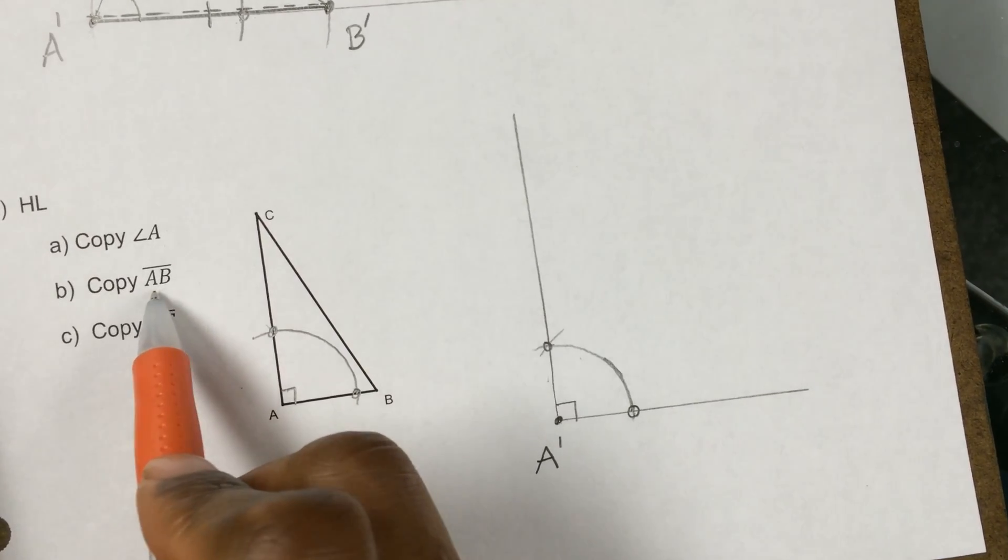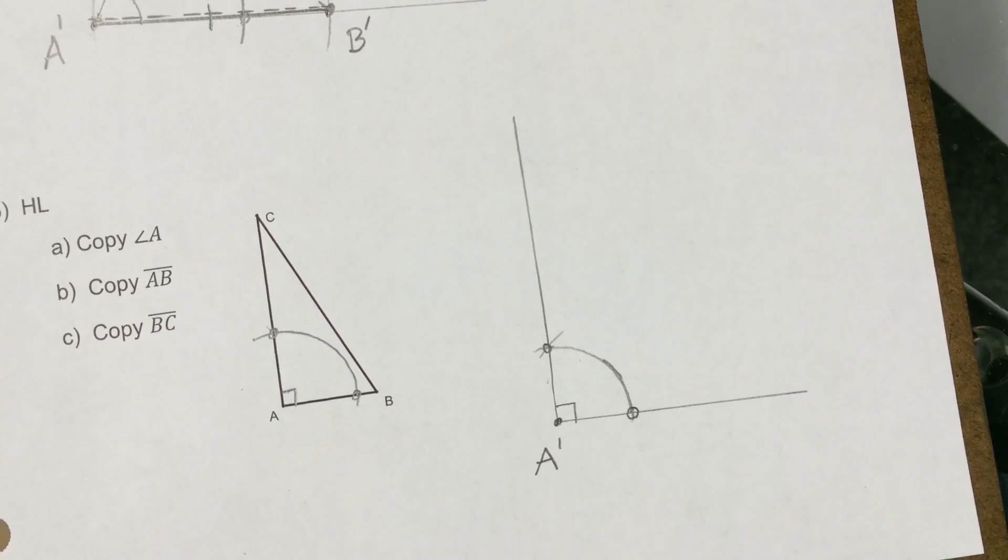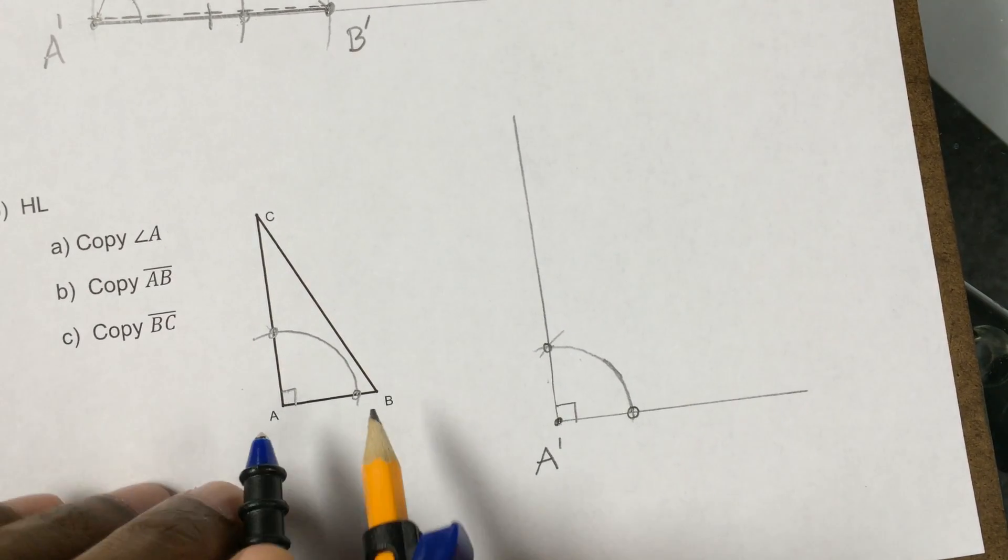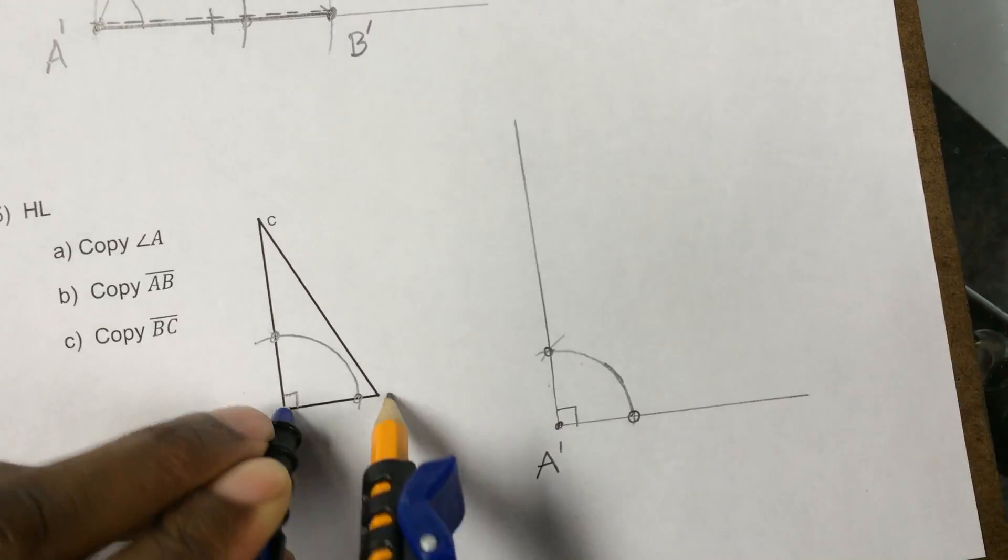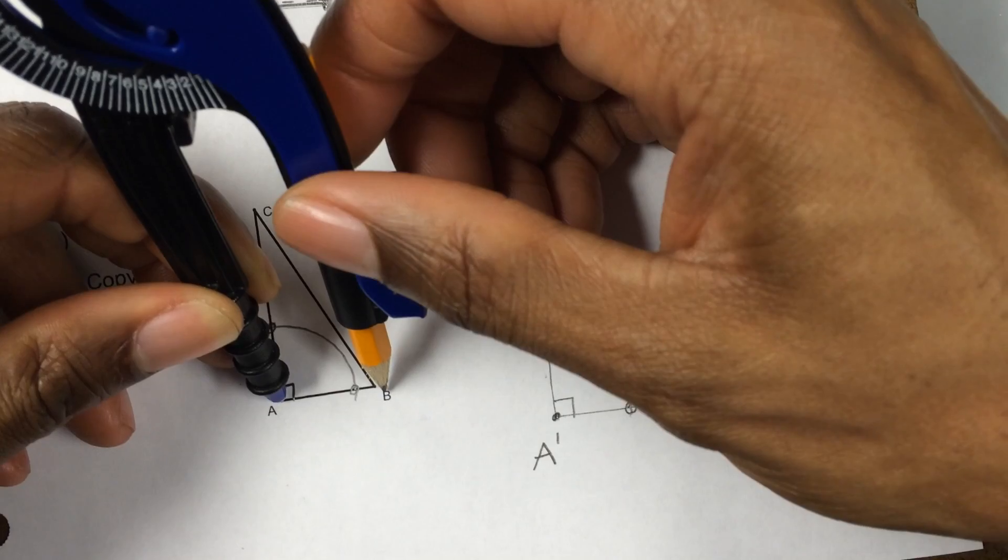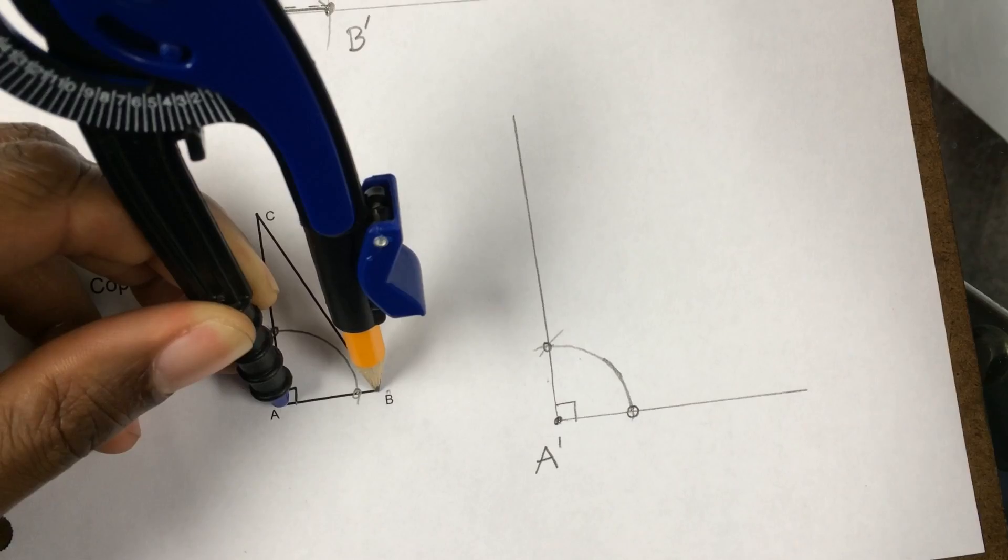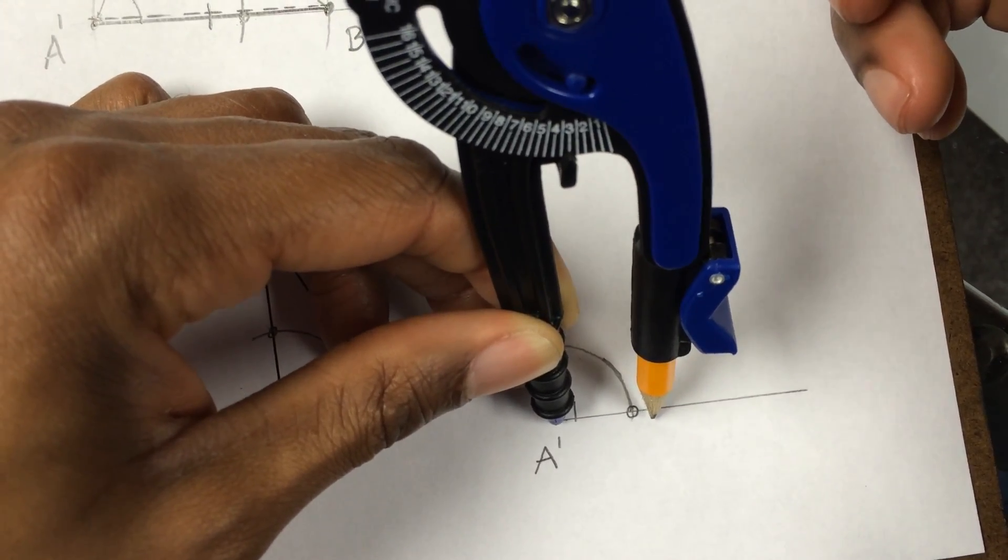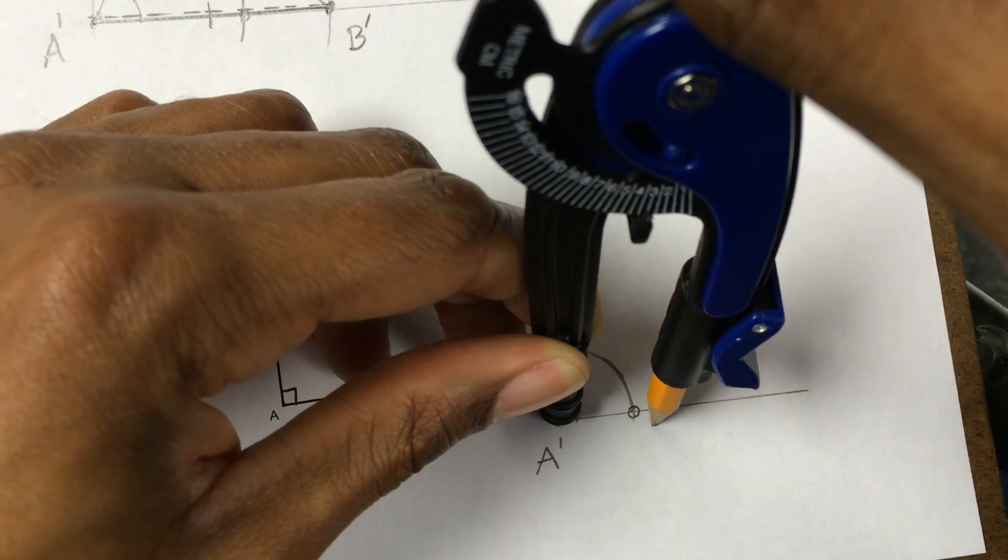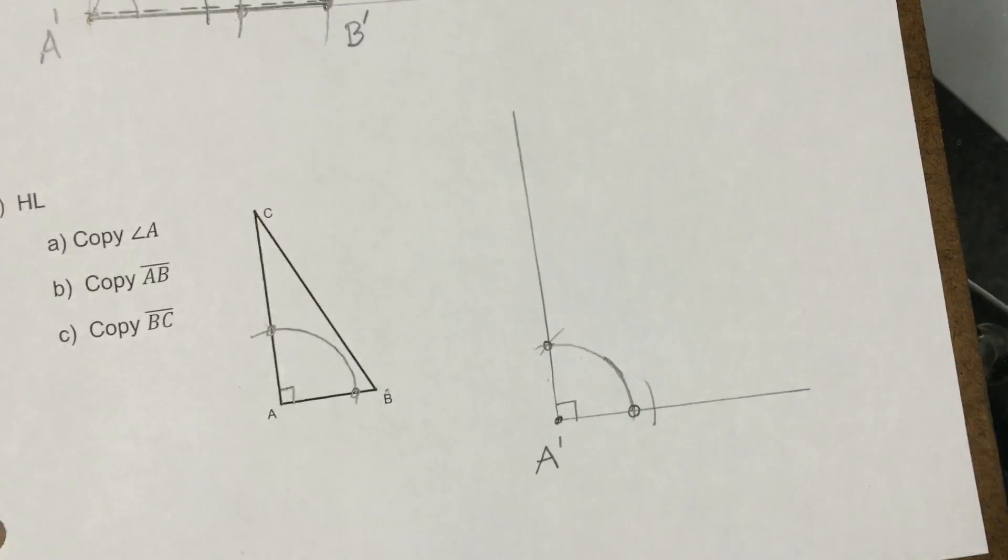Now let's copy segment AB. So to copy a segment, you use your compass to measure. OK, so there's from A to B. Make it a little bit smaller. So there's my distance from A to B. So I'm just going to pick this up and copy that distance by putting a small mark right there.